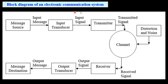Block diagram of an electronic communication system: we have the message source, message input, input transducer, input signal, transmitter, then channel — during which there is noise — then receiver, and output transducer. These components have already been discussed before.